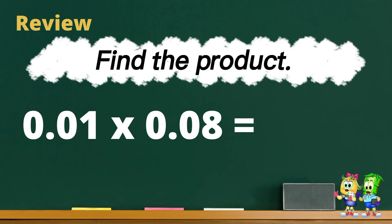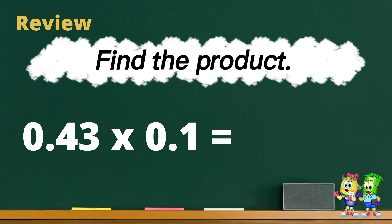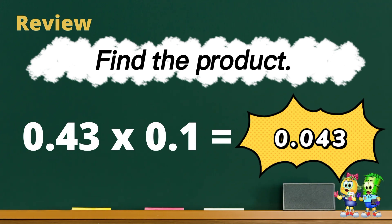Let's begin by reviewing our past lessons. Find the product of the given numbers. One hundredth times eight hundredths — the answer is eight ten-thousandths. Next, we have forty-three hundredths times one ten. The answer is forty-three thousandths.